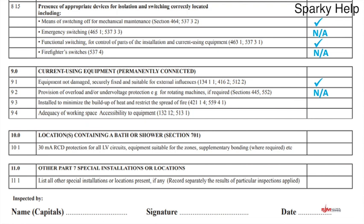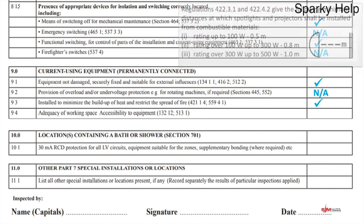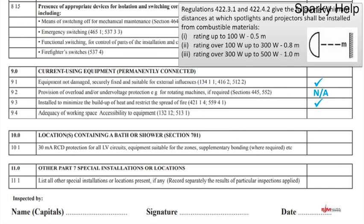Installed to minimise the build-up of heat and restrict the spread of fire — so this is about your equipment. It's as simple as lighting: all lighting we put in has a specified distance from flammable material stated on the documentation, and we're just trying to meet that. The obvious ones are heaters fitted to the wall — are they in a position where they're going to cause a fire? If not, then it's a tick; if something has been placed next to them afterwards, then it needs changing.